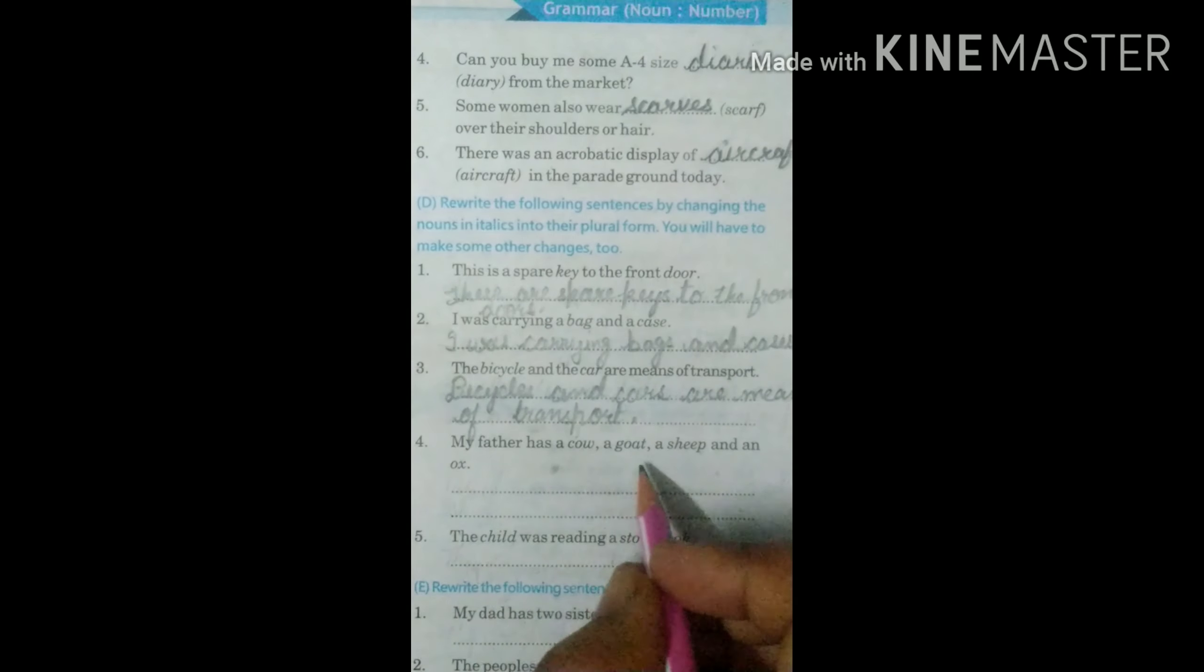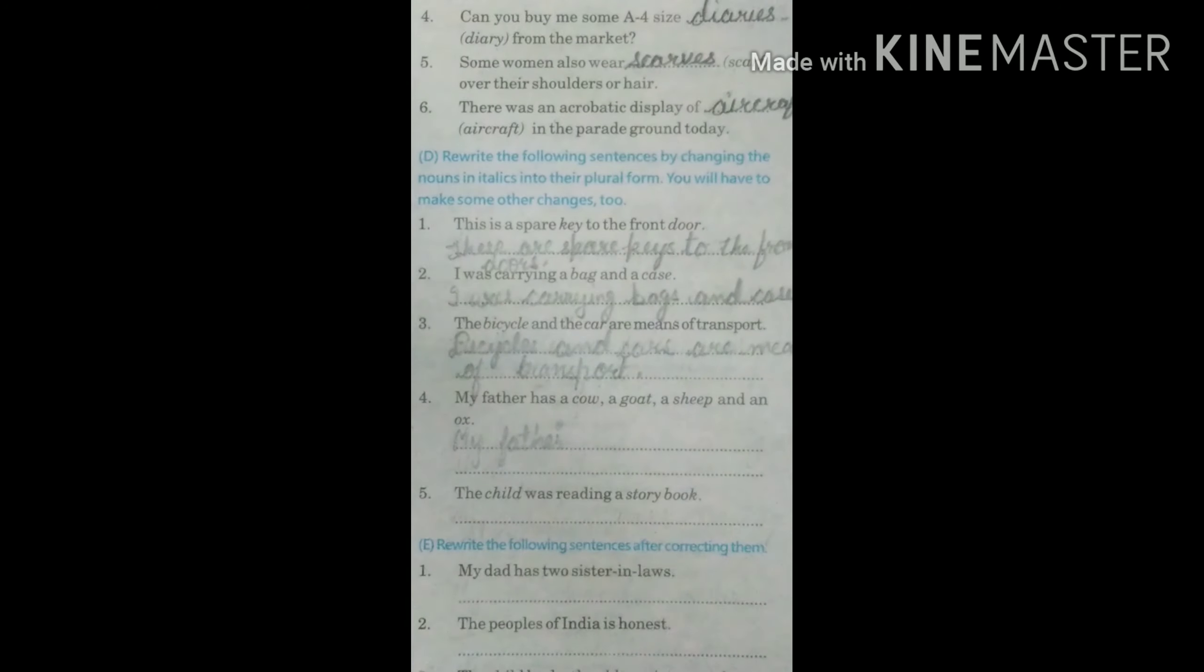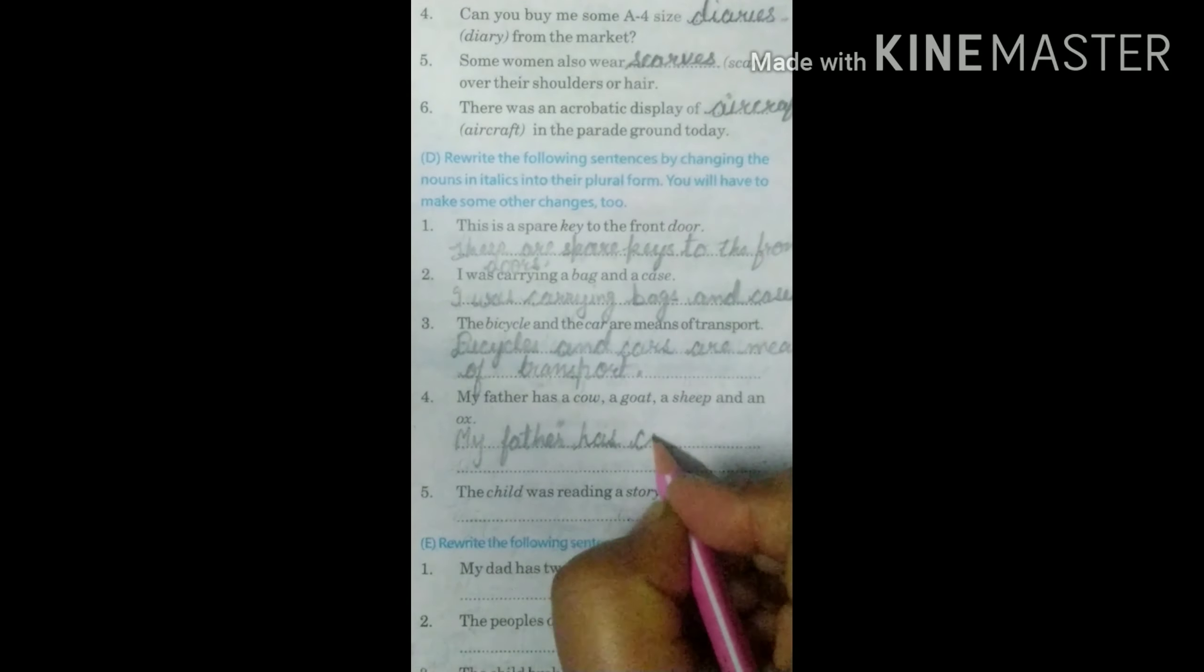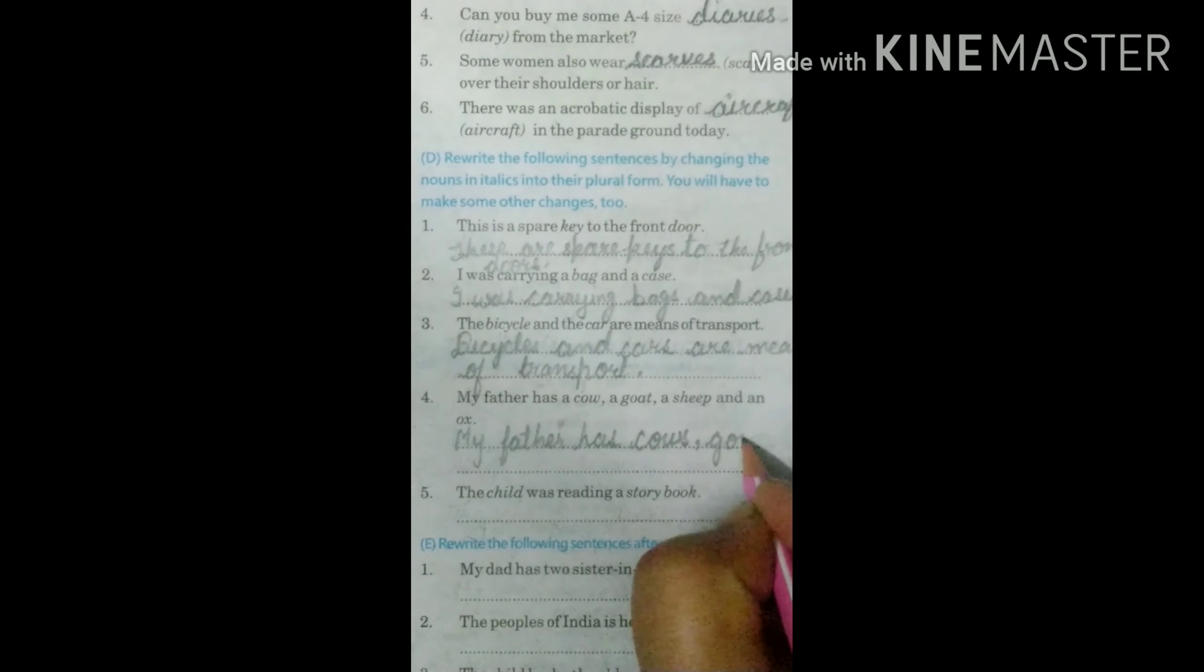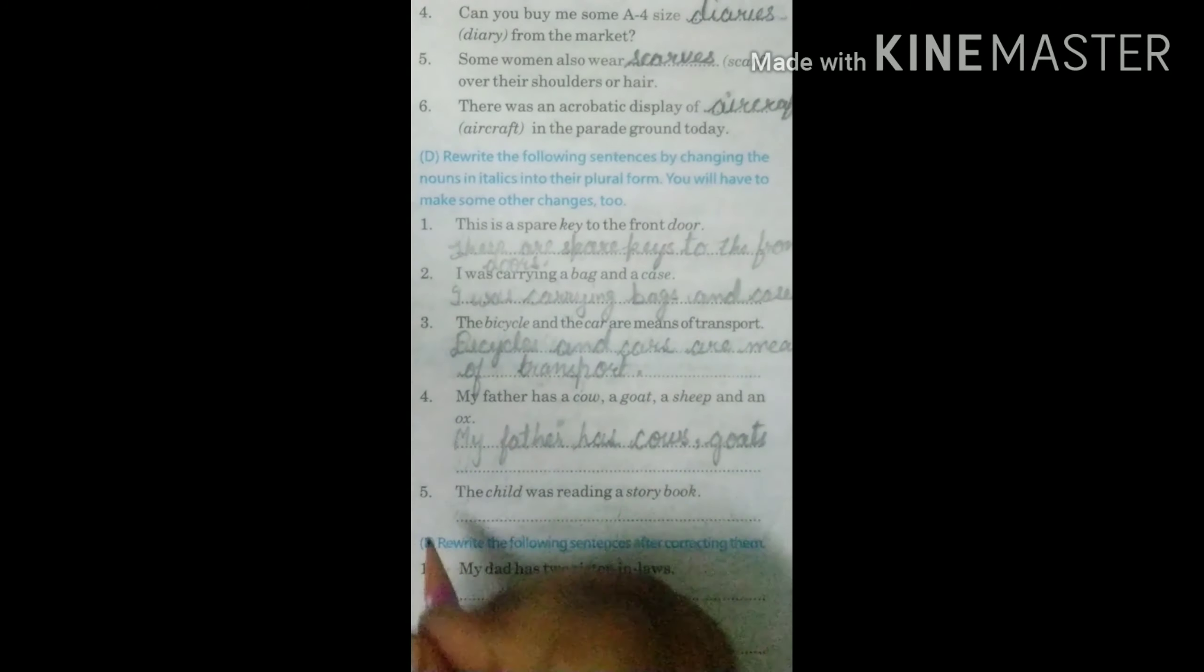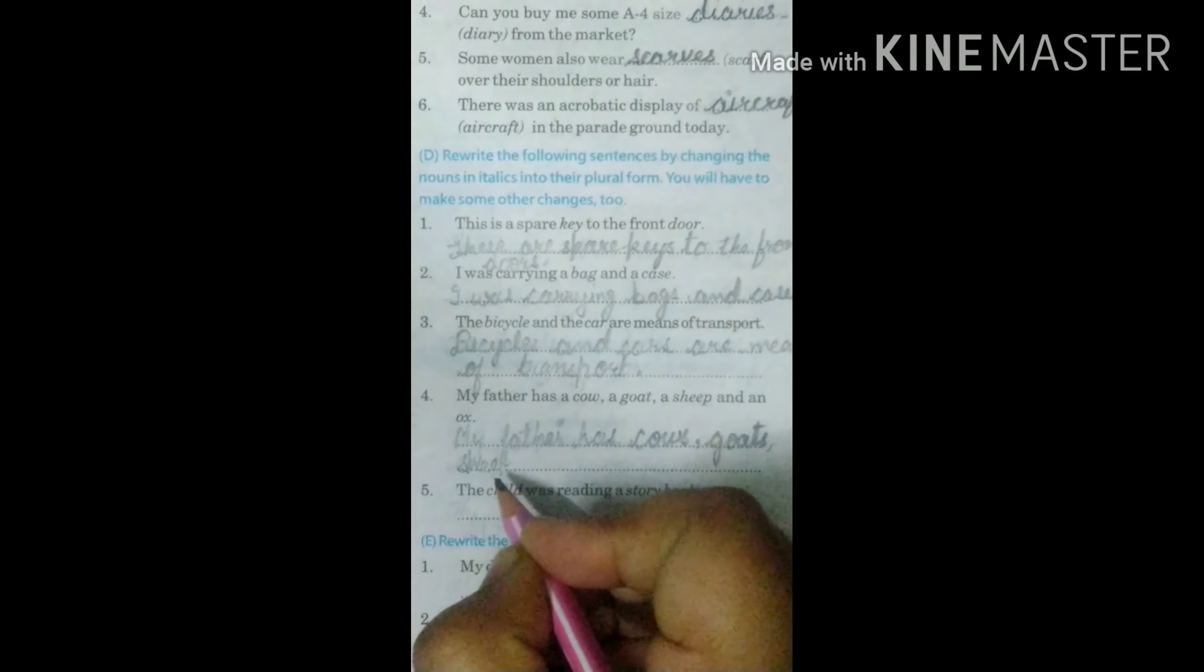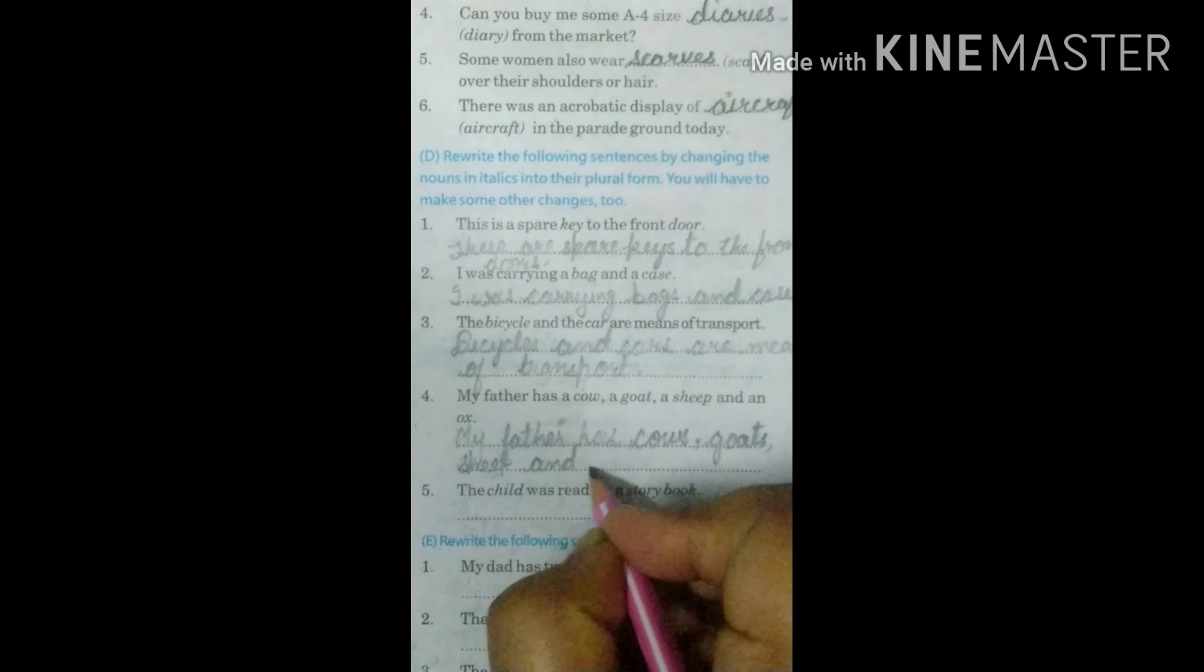My father has a cow, a goat, a sheep and an ox. My father has cows, goats, sheep and oxen.